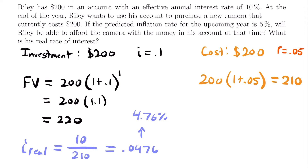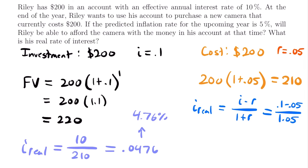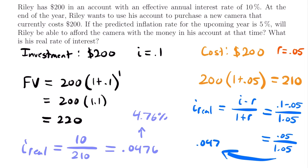The other way to find the real rate of interest is using the formula: the real rate of interest equals I minus R divided by 1 plus R. In this case, that is 0.1 minus 0.05 divided by 1.05, which equals 0.05 divided by 1.05. Plugging this into your calculator gives the same value of 0.0476, which is 4.76% — confirming that is Riley's real rate of interest in this scenario.